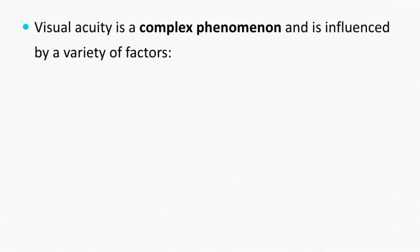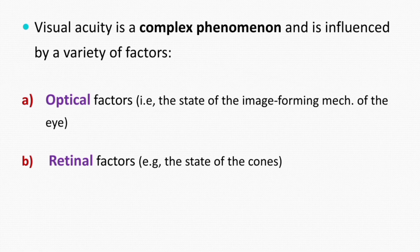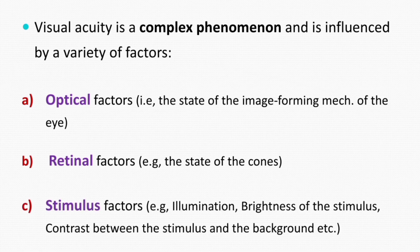Please note that visual acuity is a complex phenomenon and is influenced by a variety of factors, like optical factors - for example, the state of the image forming mechanisms of the eye. Then there are retinal factors, for example, the state of the cones. And lastly, there are stimulus factors which are also very important - that is illumination, brightness of the stimulus, and the contrast between the stimulus and the background.